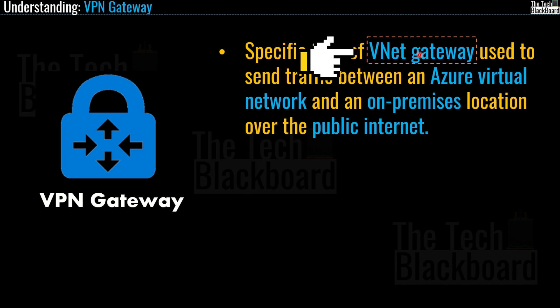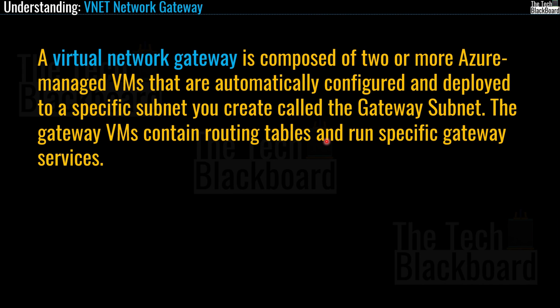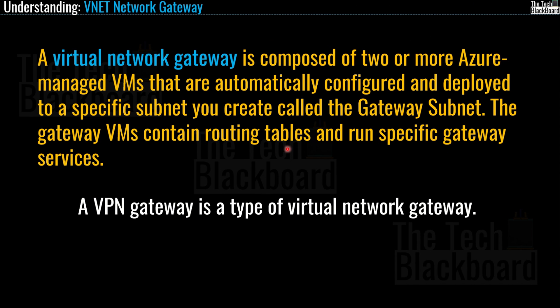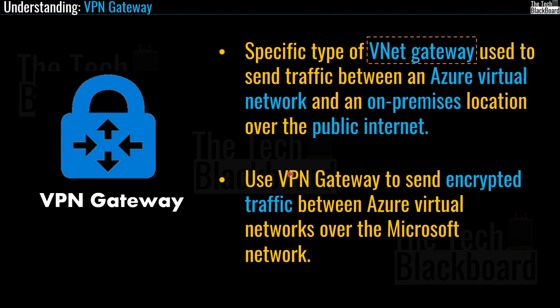A VNet gateway is a type of virtual network gateway. A virtual network gateway is composed of two or more Azure-managed virtual machines that are automatically configured and deployed to a specific subnet called the gateway subnet. The gateway subnet contains routing tables and runs specific gateway services. A VPN gateway is a type of virtual network gateway — you can use it to send traffic between virtual networks, and each virtual network can have only one VPN gateway. You can also use a VPN gateway to send encrypted traffic between Azure networks over the Microsoft network.